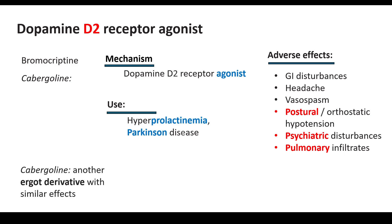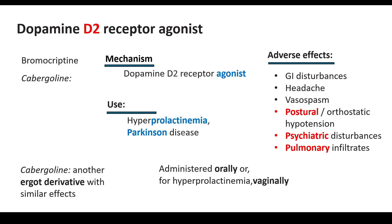Cabergoline is another ergot derivative with similar functions to bromocriptine. Both drugs are given orally, but for hyperprolactinemia, cabergoline can also be administered via the vaginal route.